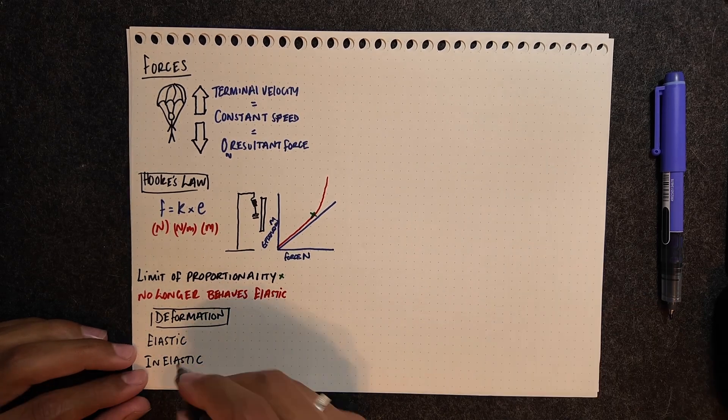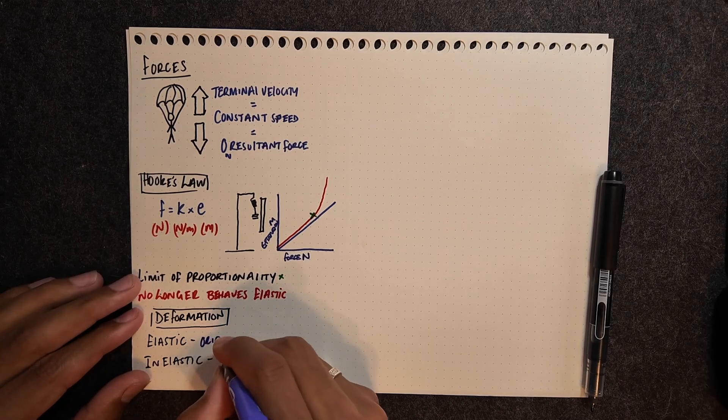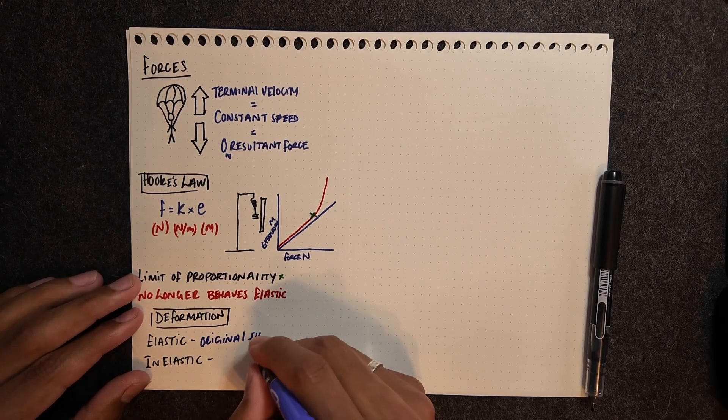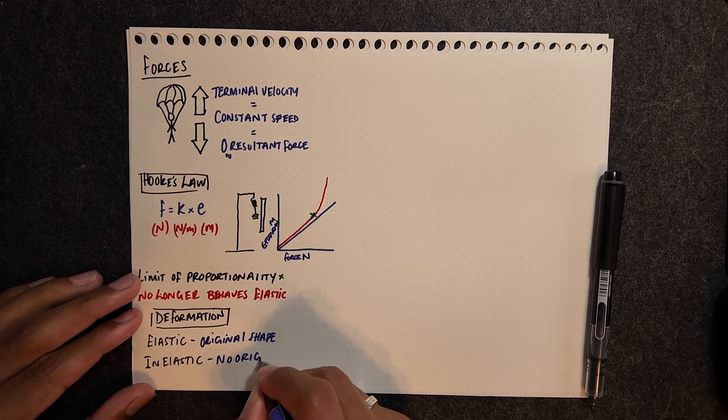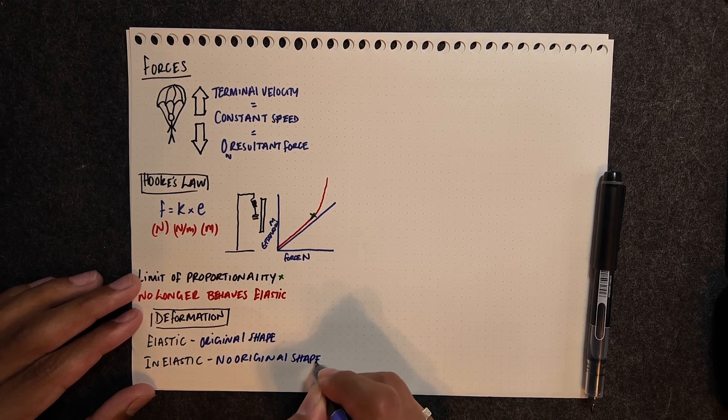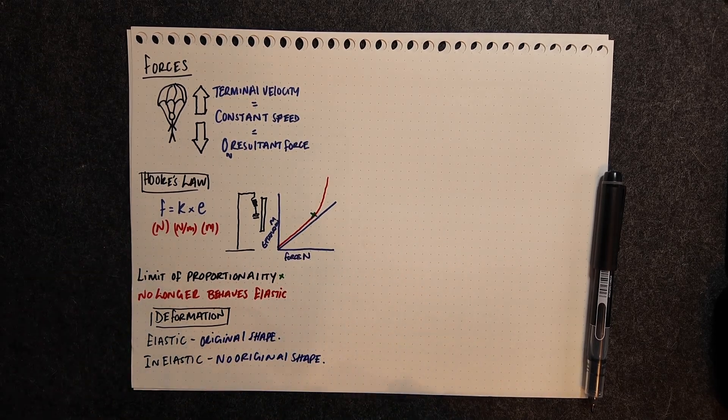So those two types of deformation I mentioned, elastic is when it goes back to its original shape. Inelastic is when it no longer returns to its original shape. It's gone past the elastic limit.